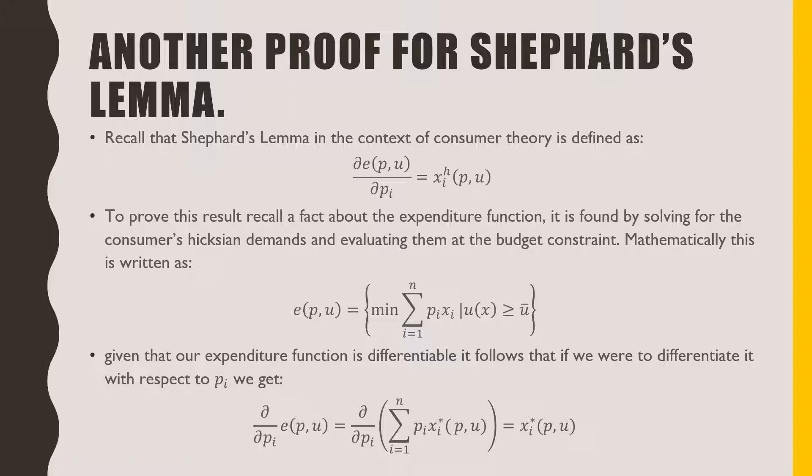To prove this result, recall the fact about our expenditure function. It is found by solving for the consumer's Hicksian demands and evaluating them at the budget constraint. Mathematically, this is written as our expenditure function is equal to the minimization of our budget constraint subject to our utility function at a fixed level of utility.